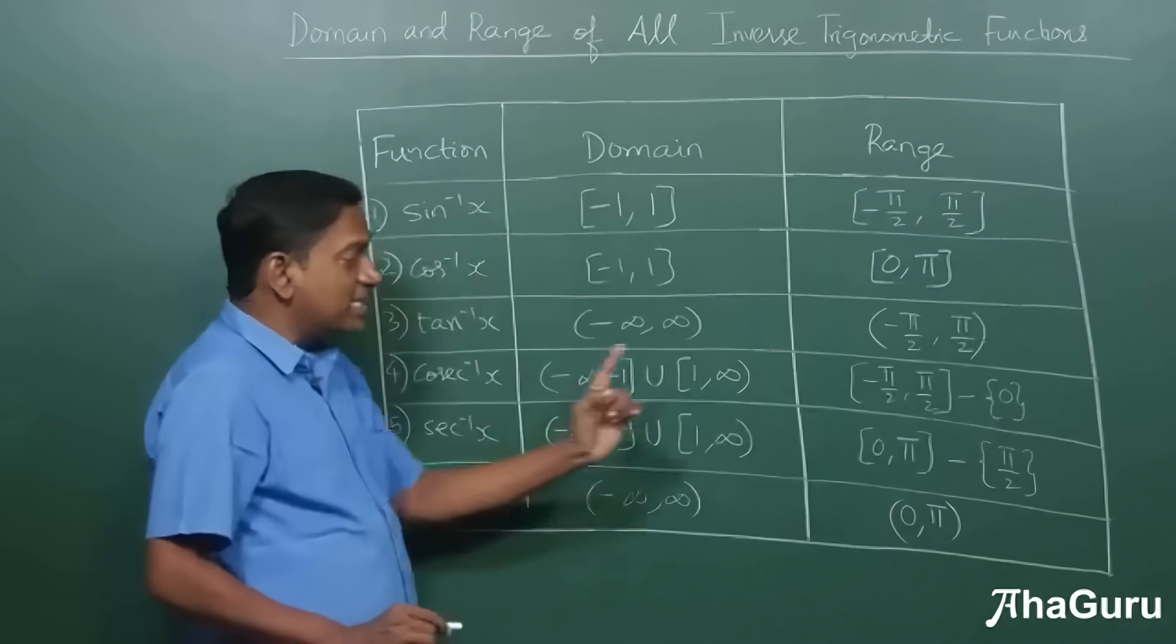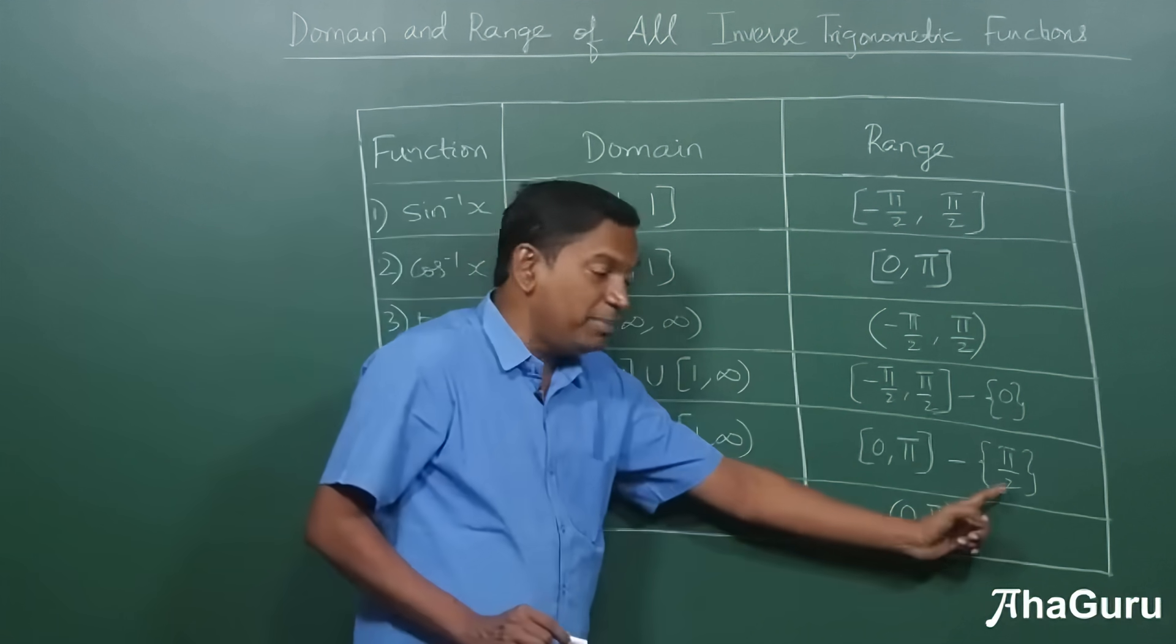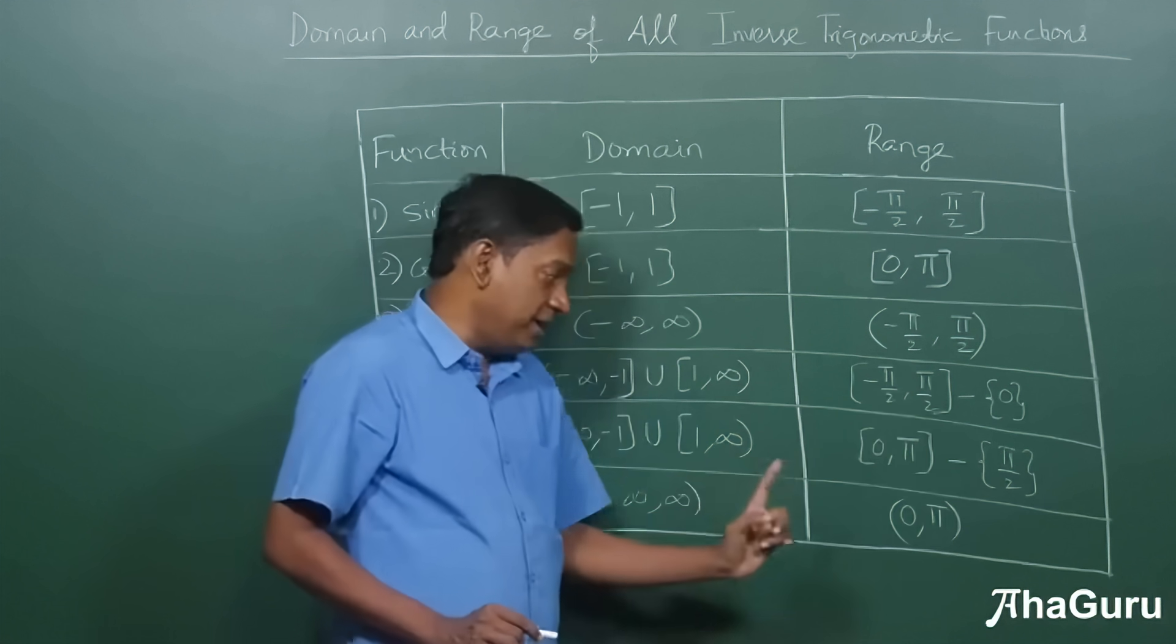Similarly, secant inverse x can never return the value pi by two because secant pi by two is undefined.